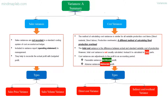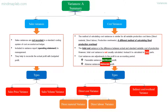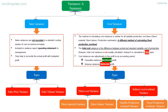Direct cost variances are further classified into direct material variance and direct labor variance. Indirect cost or overhead variances are further classified into variable production overhead variance and fixed production overhead variance. Cost variances are adjustments to the profit in an accounting period: favorable variances increase profit, and adverse variances reduce profit.